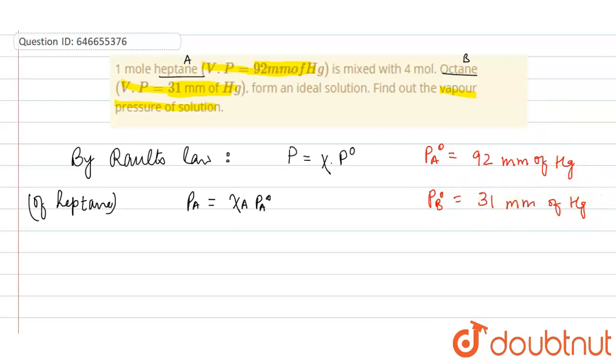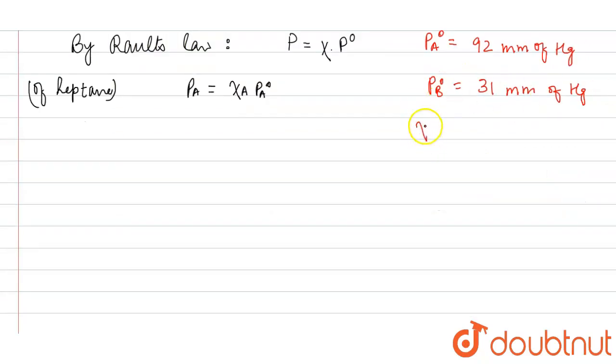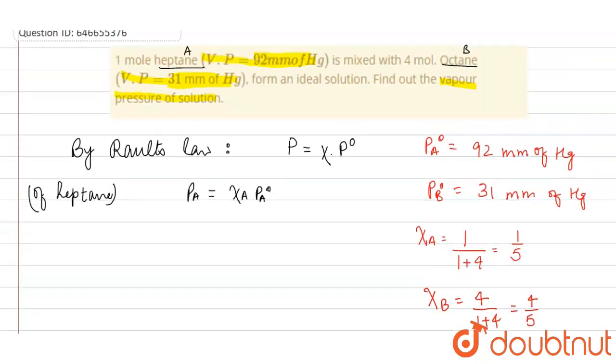Now what is the mole fraction here? One mole of heptane and four mole of octane are given, so mole fraction of A, that is of heptane, is moles of heptane upon total moles, that is one plus four, it will be equals to one by five. And mole fraction of octane, that is B, will be equals to four upon total moles, that is four upon five. So put all the values accordingly.